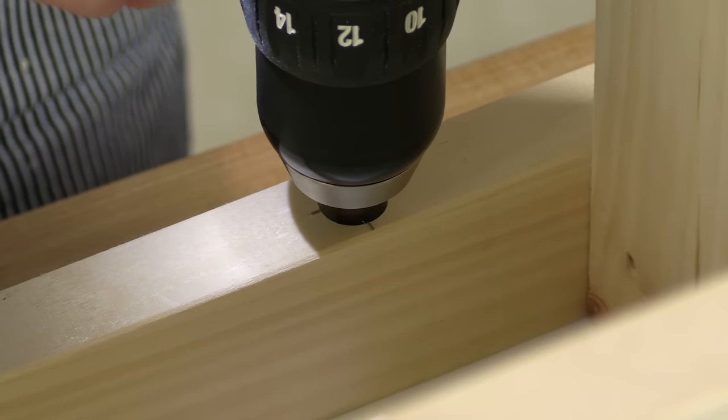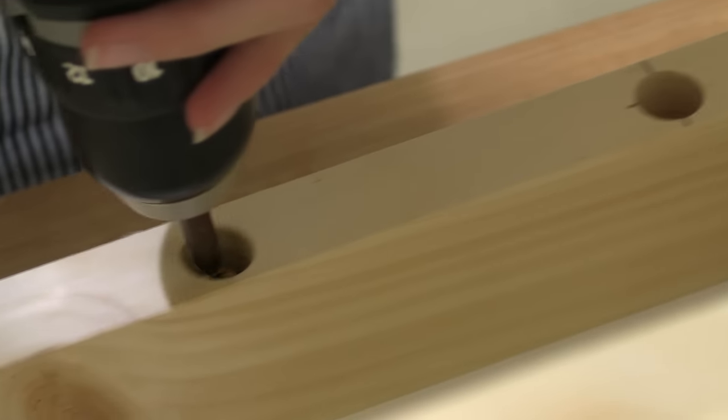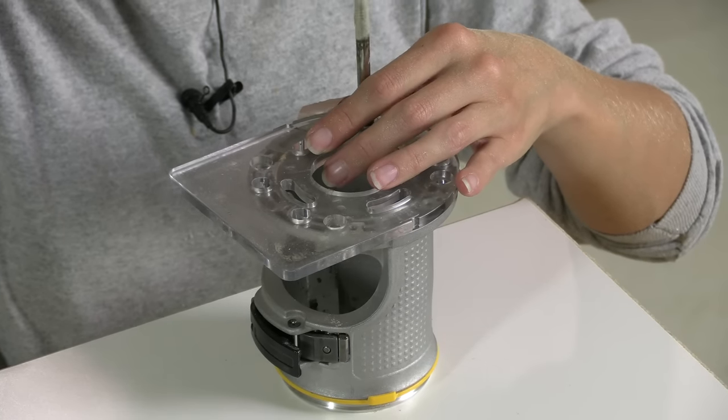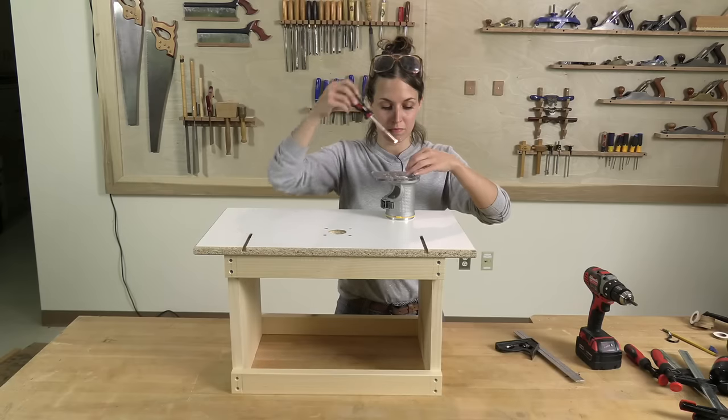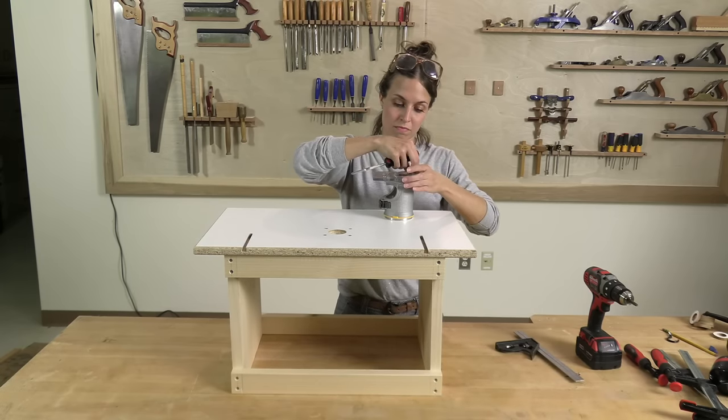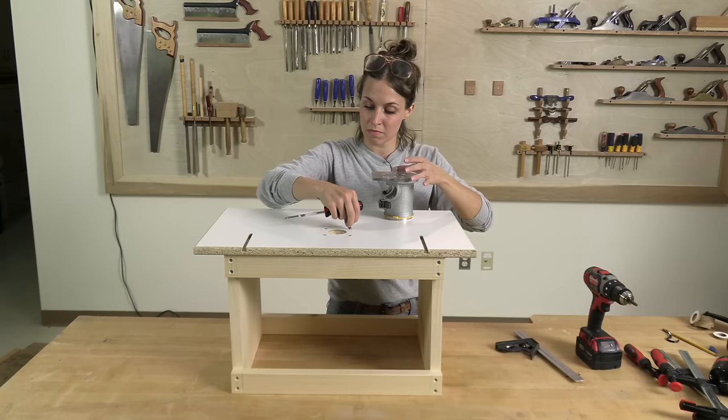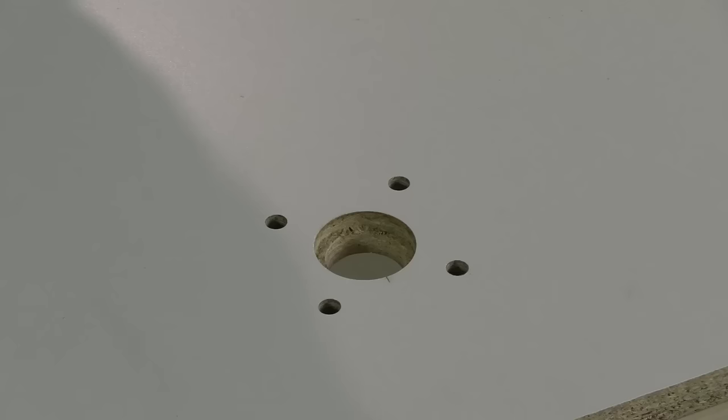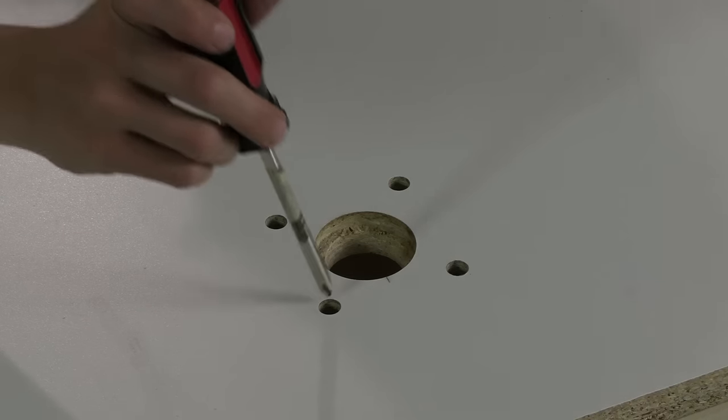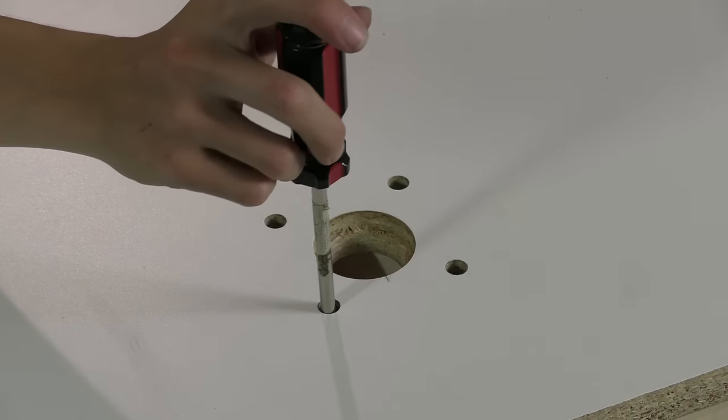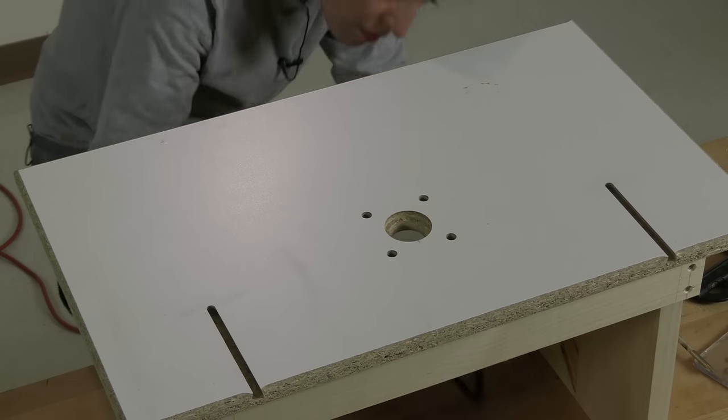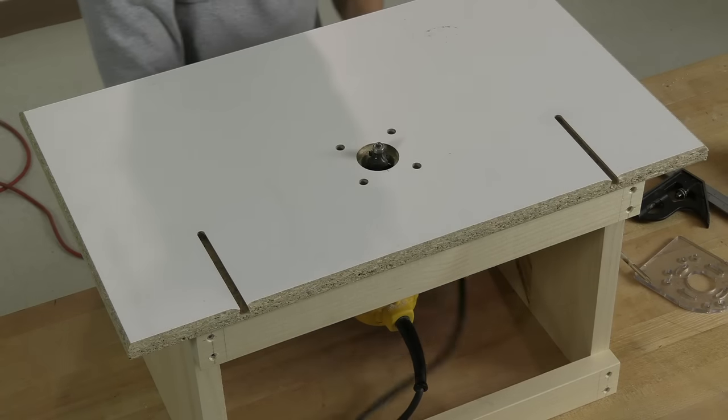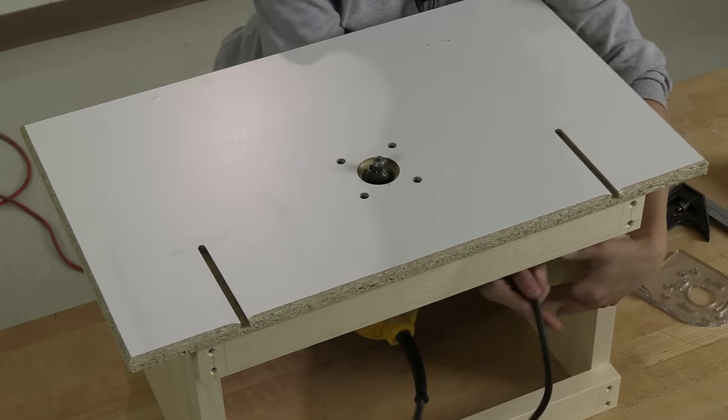Then I'll center the base onto the tabletop and attach with screws. I'll remove the plate on the bottom of my trim router and use those same screws to attach the router base to the tabletop. Dropping those little screws through my counter bores and removing the base plate, I can attach the screws from the top with the router base on the bottom. Then I can slip the motor into the base and lock it into place and slide the power cord out the back so it's out of the way.